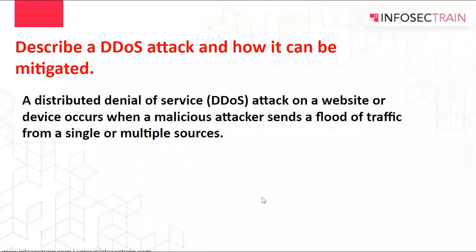Describe a DDoS attack and how it can be mitigated. A Distributed Denial of Service attack on a website or device occurs when a malicious attacker sends a flood of traffic from a single or multiple sources. DDoS is a type of cyber attack in which the offender visits a website and creates several sessions to prevent authorized customers from using the service. Native tools that can assist in preventing DDoS attacks on AWS services are: AWS Shield, AWS WAF, Amazon CloudFront, ELB, and VPC.